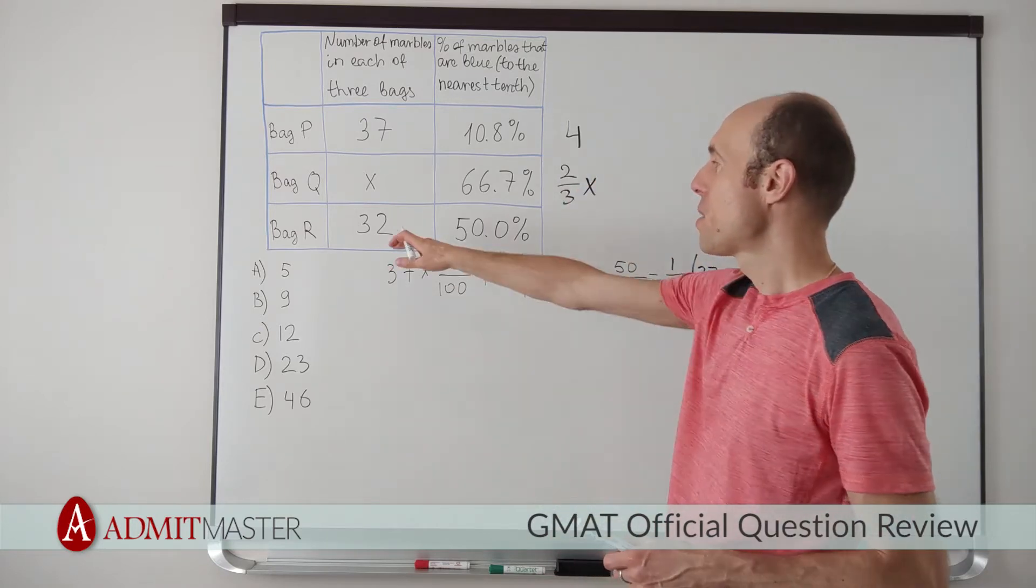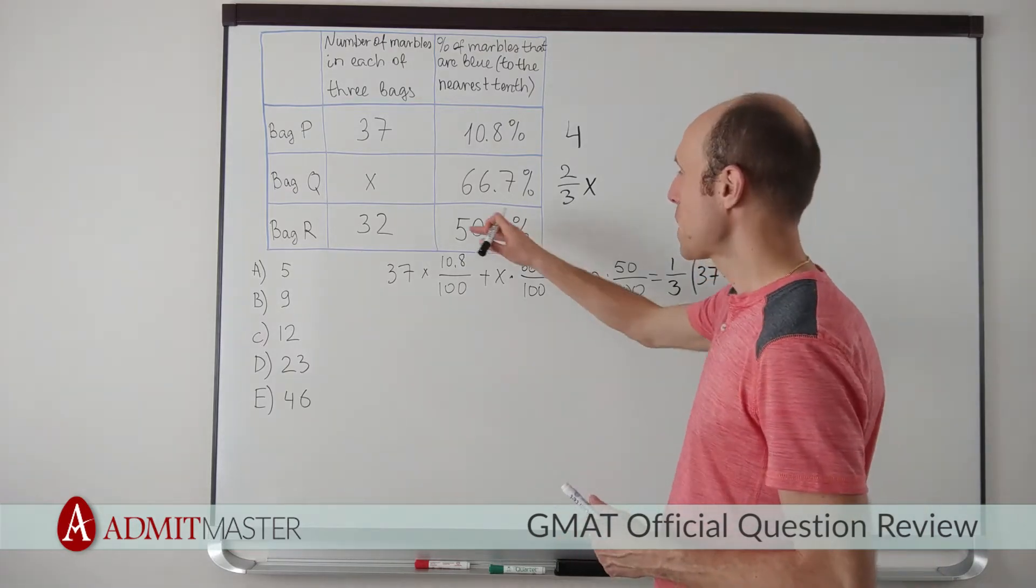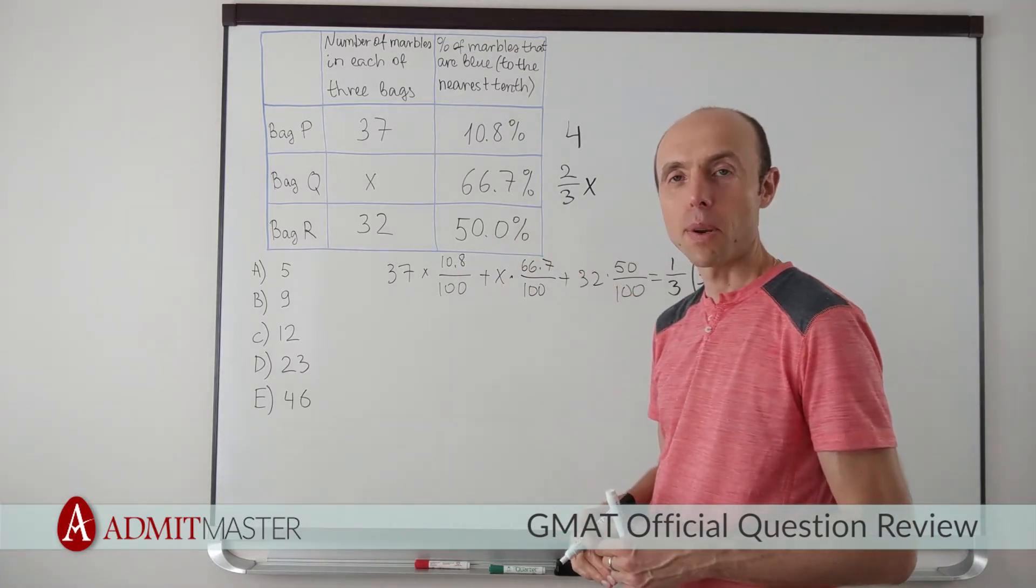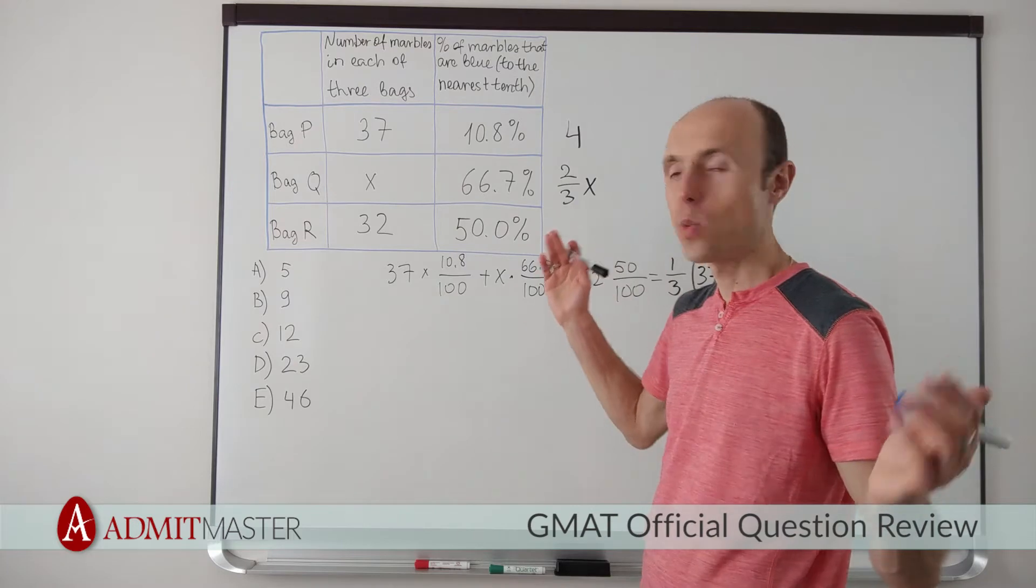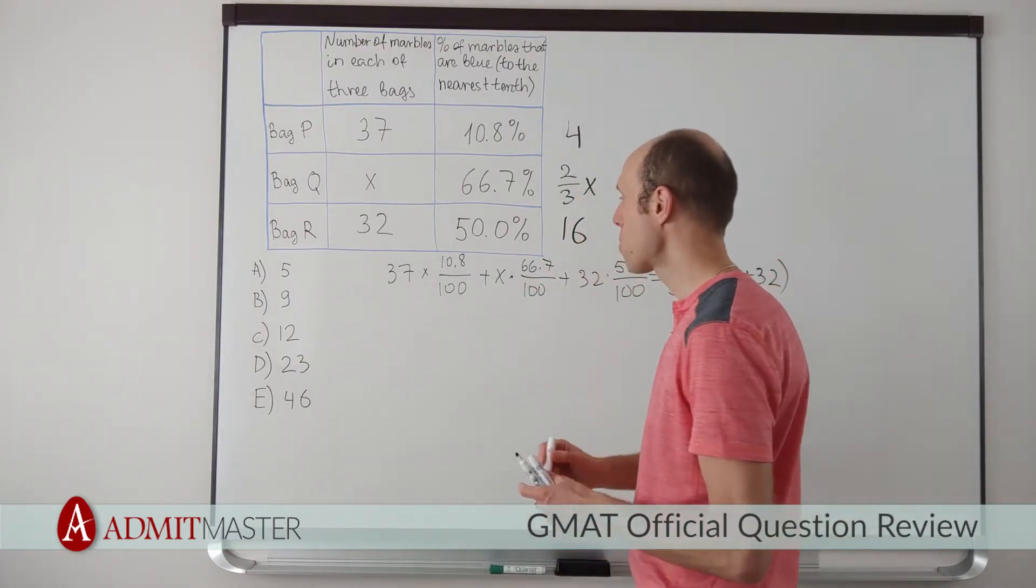Now, finally, in the third bag, 50% of the marbles are blue. What is 50% of 32? What is half of 32? That is 16. All right.